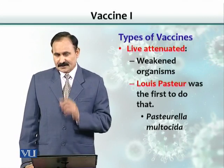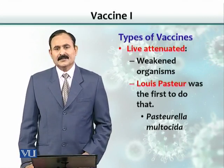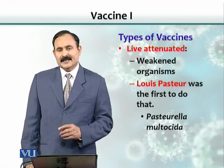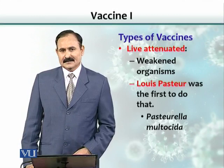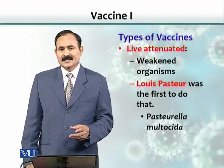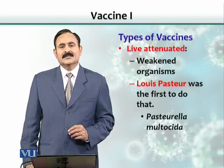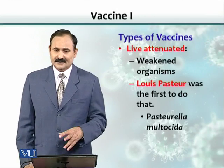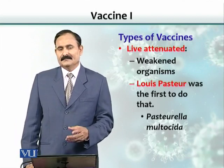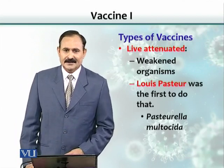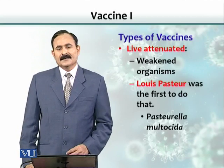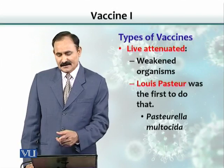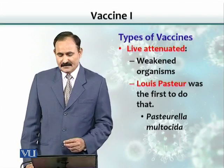Louis Pasteur was basically the first to do that, working on Pasteurella multocida. He tried to demonstrate infection in chickens for the royal family but did not succeed, and then found out it was an attenuated strain of bacteria. So the observation that weakened strains of organisms can be used as a vaccine was discovered by Louis Pasteur.